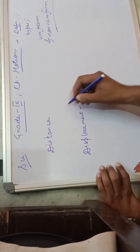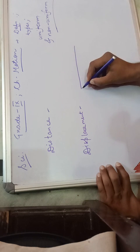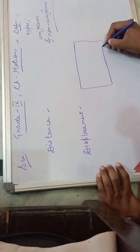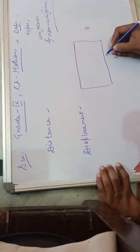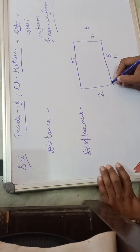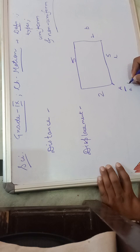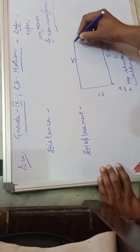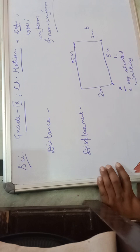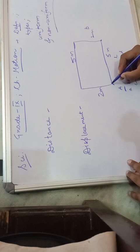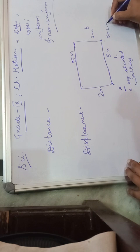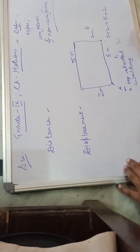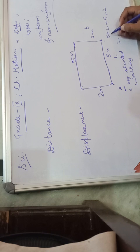Suppose this is a rectangular field with length 5 meters and breadth 2 meters. From point A, a boy started walking. He walked 5 meters, then 2 meters, then back 5 meters, then another 2 meters, returning to the start. The total distance he covered is 5 + 2 + 5 + 2 = 14 meters. This is the path covered, also equivalent to the perimeter.